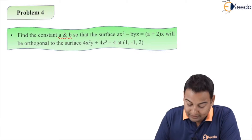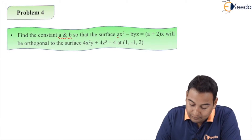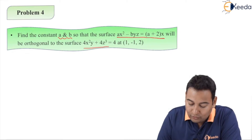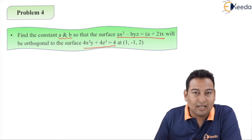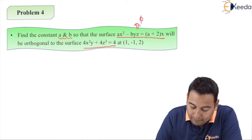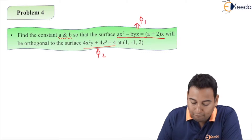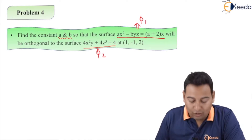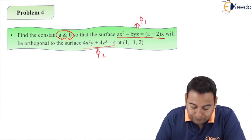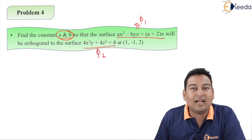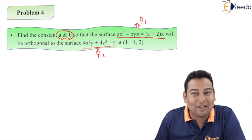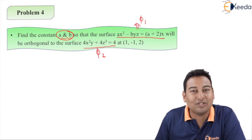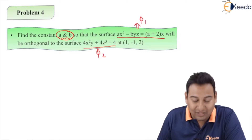So that the surfaces will be orthogonal to each other. First of all, surface means scalar potential. There are two phi given — this is phi one and this is phi two. I want two constants a and b. For finding two constants a and b, I need two equations. Let's identify how I can get two equations for getting the values of a and b.